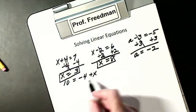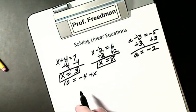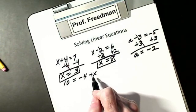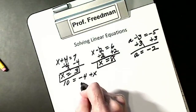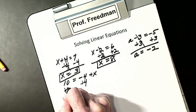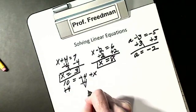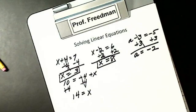My variable doesn't always have to be on the left side — it could be on the right side. But the concept is the same. I want x alone. It's not alone. I have to get rid of the negative 4. So I'm going to add 4. What I do to one side, I do to the other side. So I get x equals 14.